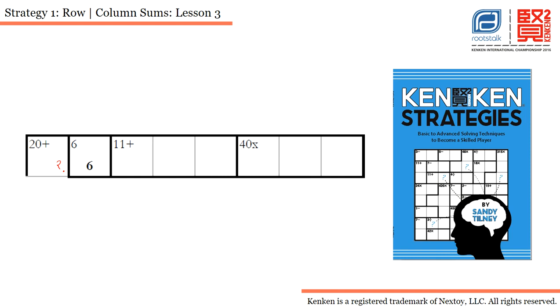I will be using the row column sums strategy. That means this particular row will have all the numbers from 1 to 8, so the sum of all the numbers in this row will be 36. We have discussed this in our earlier lessons.